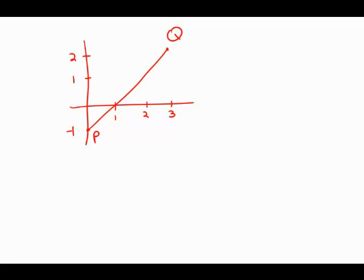In the figure above, the point on the segment PQ that is twice as far from P as from Q is - they want us to find that point.